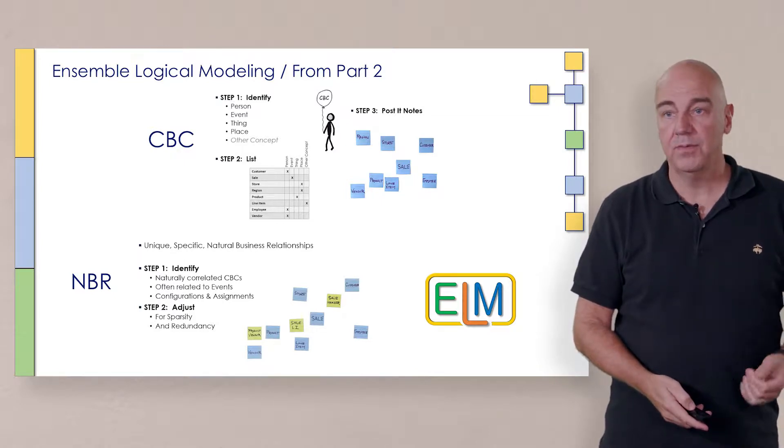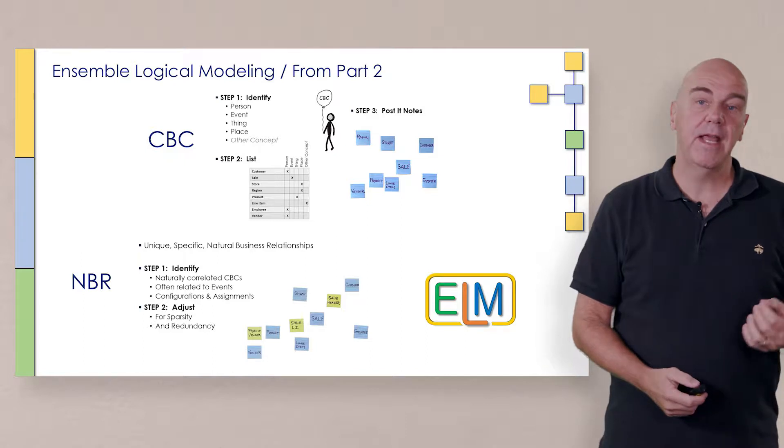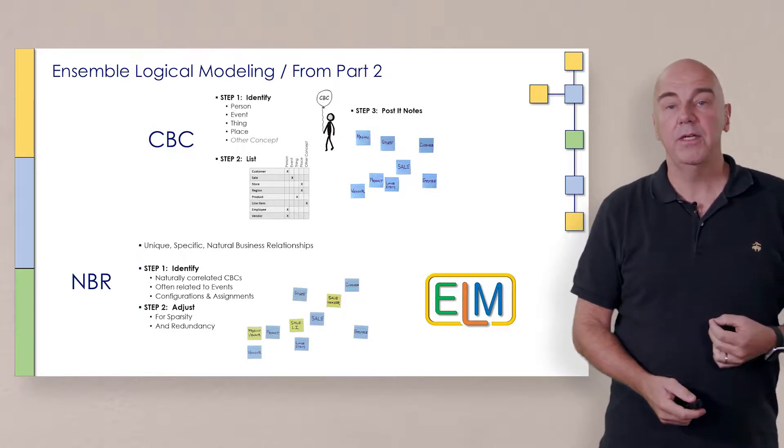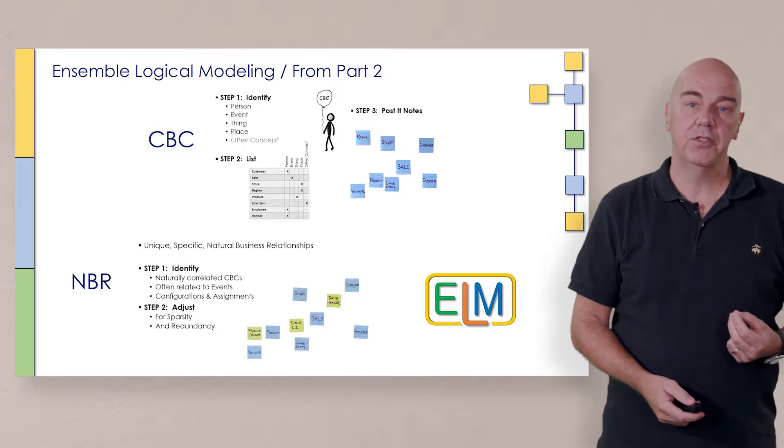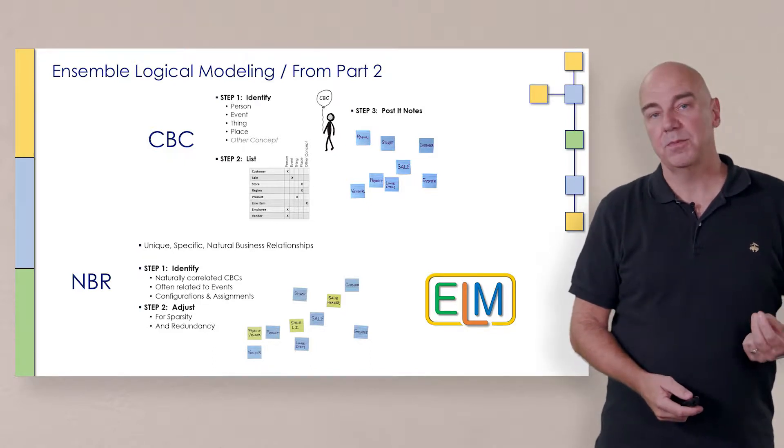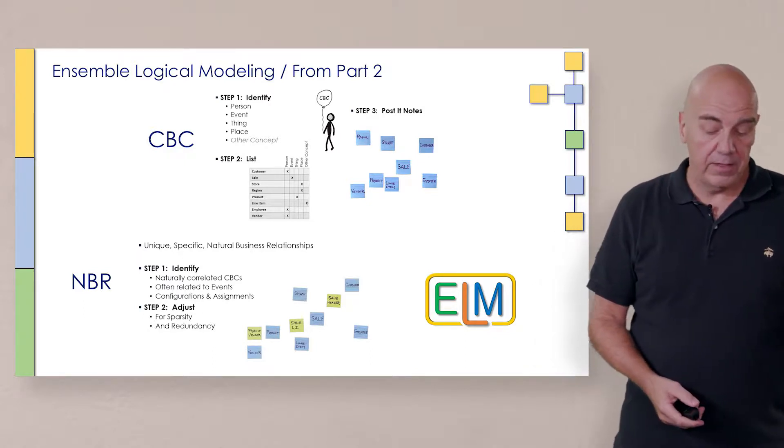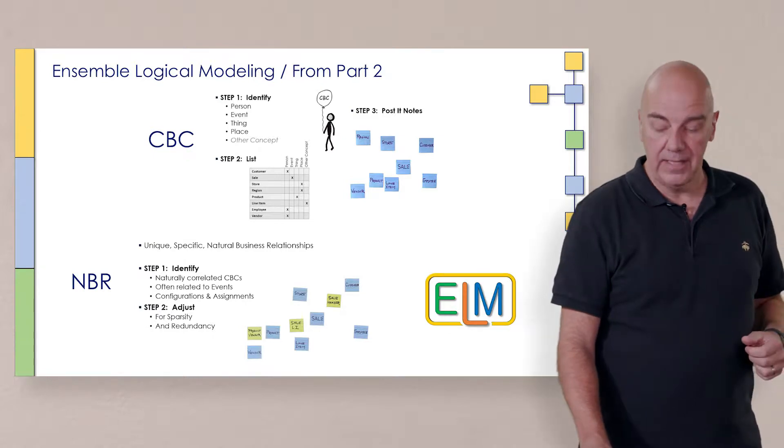Once we had those done, we looked at the natural business relationships and we did reiterate the fact that we're talking about unique, specific natural business relationships. We've done some adjustment for the sparsity and redundancy in order to come up with those. Now let's go ahead to the board and take a look at the last step.